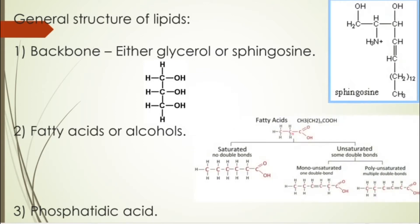What binds to this backbone are fatty acids or alcohols — alcohols in the case of phospholipids, and fatty acids in the case of triacylglycerols. You can have two types of fatty acids: saturated, where all bonds are single bonds, or unsaturated, where there is a presence of a double bond somewhere in the structure.